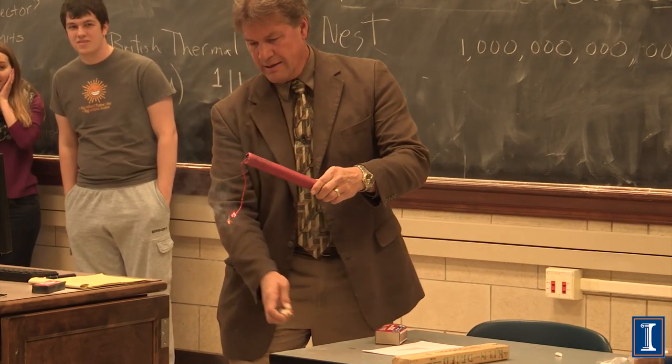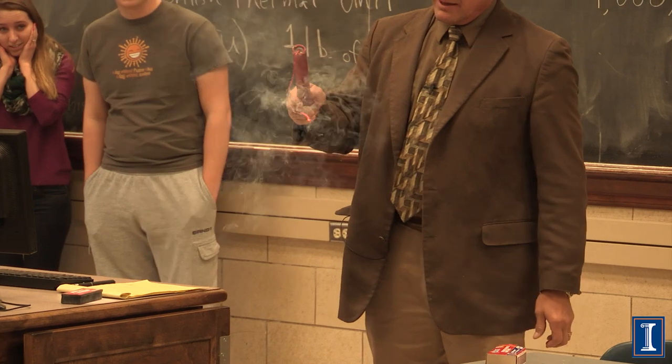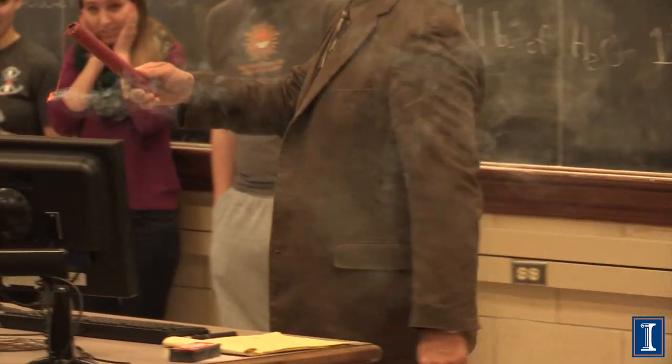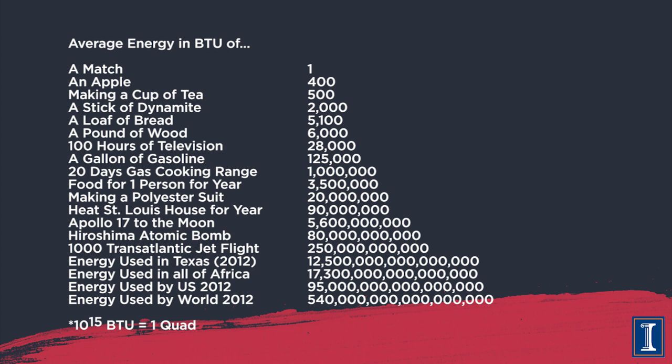Don't confuse energy and power. Consider a stick of dynamite versus a piece of wood or a loaf of bread — clearly the dynamite is a lot more powerful, but if you actually look at the energy content, both the loaf of bread and the piece of wood have maybe more than twice as much energy as the stick of dynamite. They just don't have anywhere near that power.